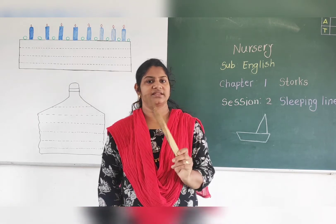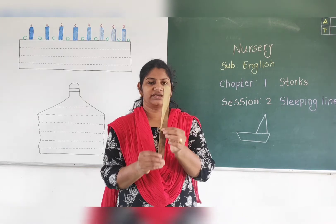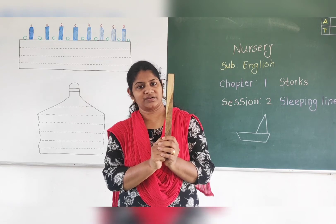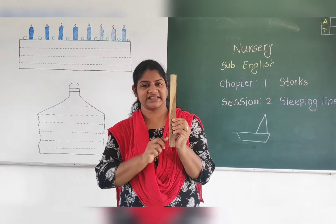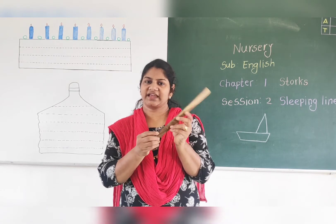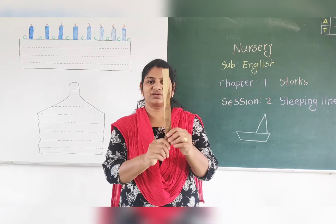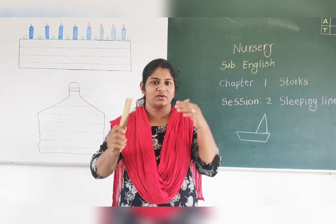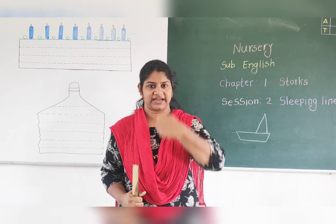I have one stick. Now I am going to hold this stick like this. Tell me which line is this? Yes, this line is a slipping line. Slipping line is slipping line, and standing line is — if you are going to stand, that is a standing line. Whenever you are going to stand like this, then which line is this? Standing line.